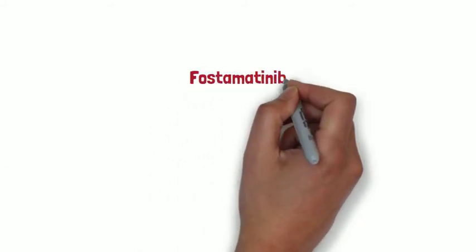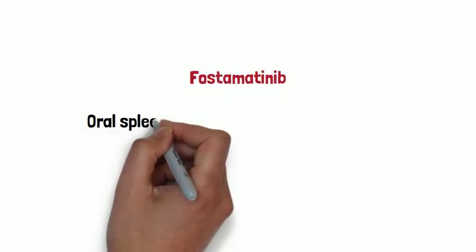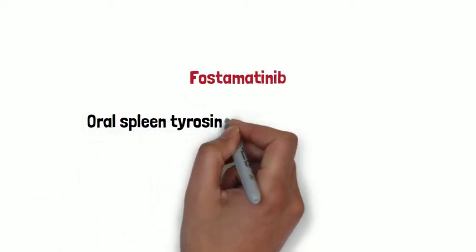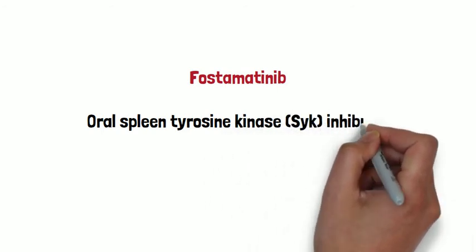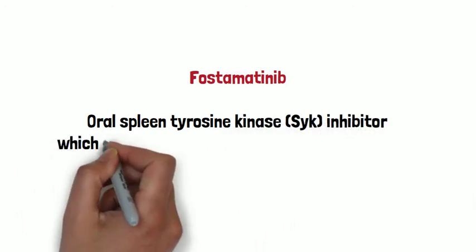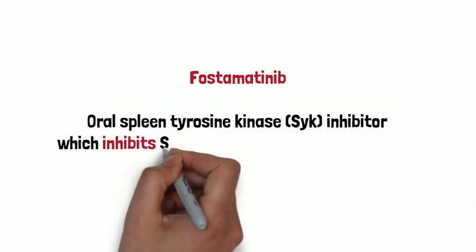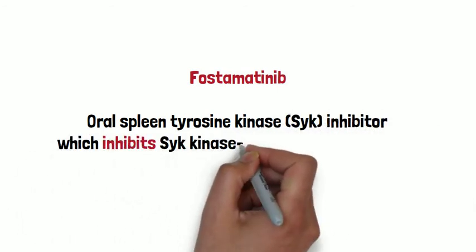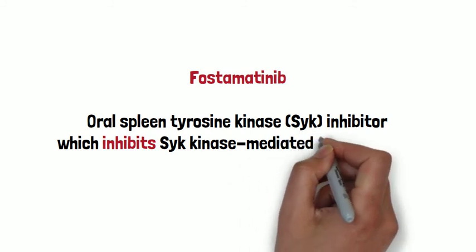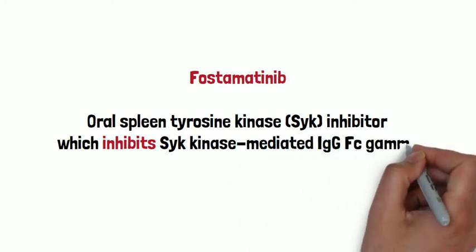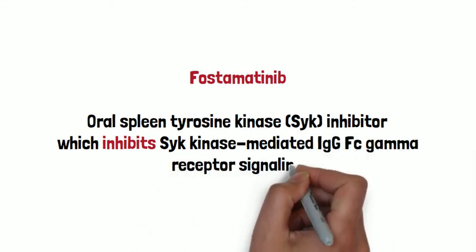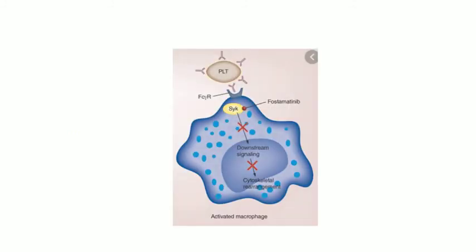Another second-line therapy is fostamatinib. It is an oral splenic tyrosine kinase inhibitor. It inhibits SYK kinase-mediated IgG-Fc gamma receptor signaling, and has been approved for use in ITP in patients in whom one previous therapy has failed.